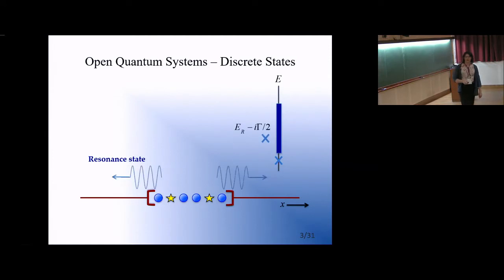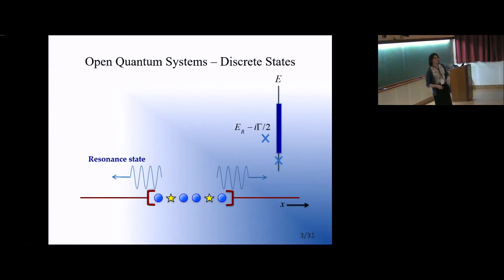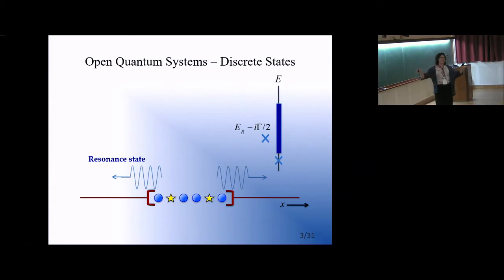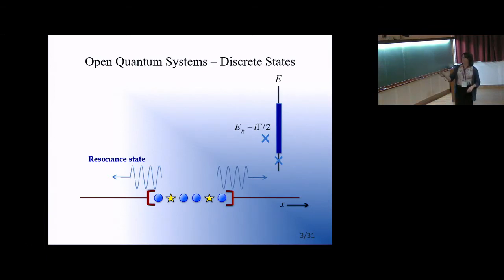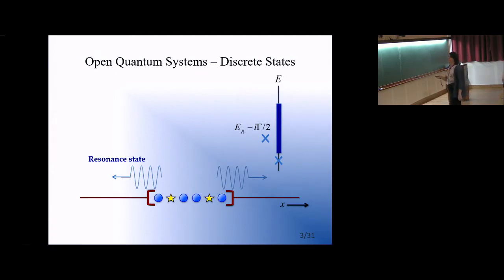We can also have resonance states, which represent some kind of balance between the properties of the discrete sector and those of the environment. These represent an outgoing property into the environment, associated with exponential decay. This object has a complex eigenvalue where the imaginary part gives the decay width, which describes the exponential decay.